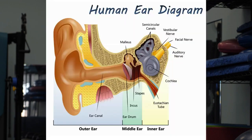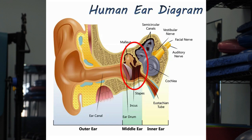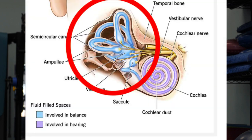The ear has three sections. There's the outer ear, which is the earlobe and the ear canal all the way up to the eardrum — its purpose is to conduct sound into the ear. Then there's the middle ear, which is really three bones: the malleus, the incus, and the stapes. These bones vibrate when sound comes through the outer ear and conduct those vibrations of sound into the inner ear.